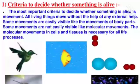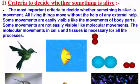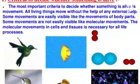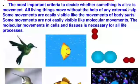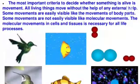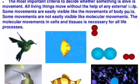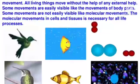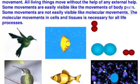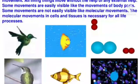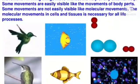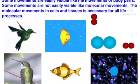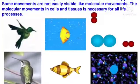The most important criteria to decide whether something is alive is movement. All living things move without the help of any external help. Some movements are easily visible like the movements of body parts, and some movements are not easily visible like molecular movements. The molecular movements in cells and tissues are necessary for all life processes.